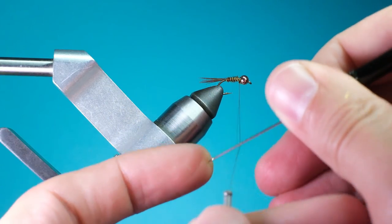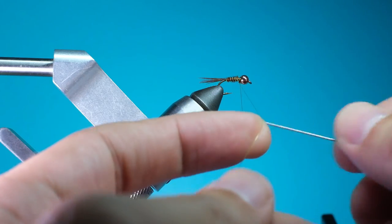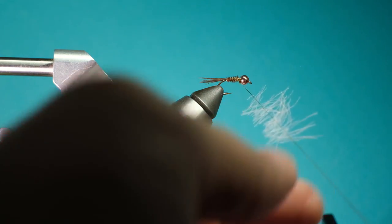The next step is to take a bodkin and split the thread, so you can insert the CDC feathers between strands. Give the bobbin a nice spin to lock them in place.